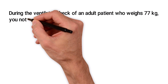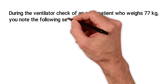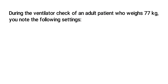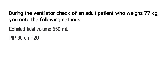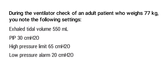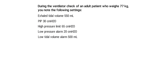During the ventilator check of an adult patient who weighs 77 kilograms, you note the following settings: an exhaled tidal volume of 550 milliliters, a peak inspiratory pressure of 30, a high pressure limit of 65.